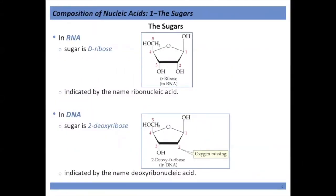In RNA the sugar is D-ribose, drawn here in its furanose form as a five-membered ring. Looking at the anomeric carbon you can tell it is an aldo sugar from a D sugar, and both OHs off the ring are pointed down. Ribose was one of the four sugars we needed to know.